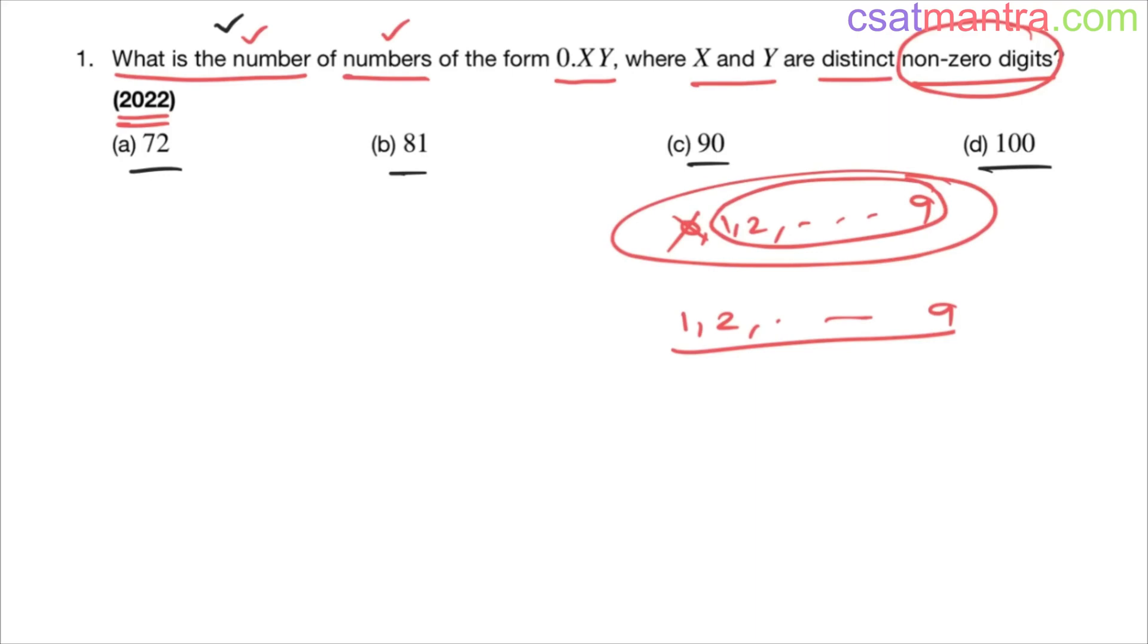We use permutation and combination, my friends. Here also I'm solving this problem using permutation and combination. So point XY, now out of these nine digits how many ways you can fill this space X? Nine. There is no restriction, right?